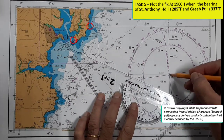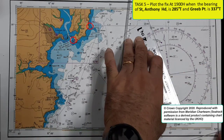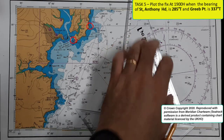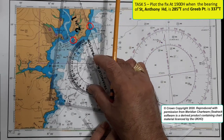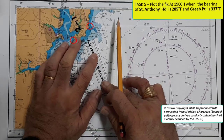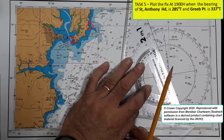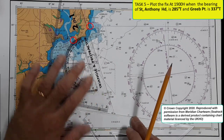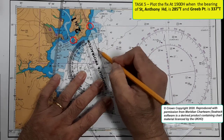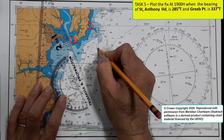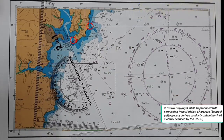337 is 330 plus 7. Again, bring this side to the Grip Point, which is right here. Grip Point — 337. The intersection is your fix at 1900 hours. This is your fix — 1900 hours.